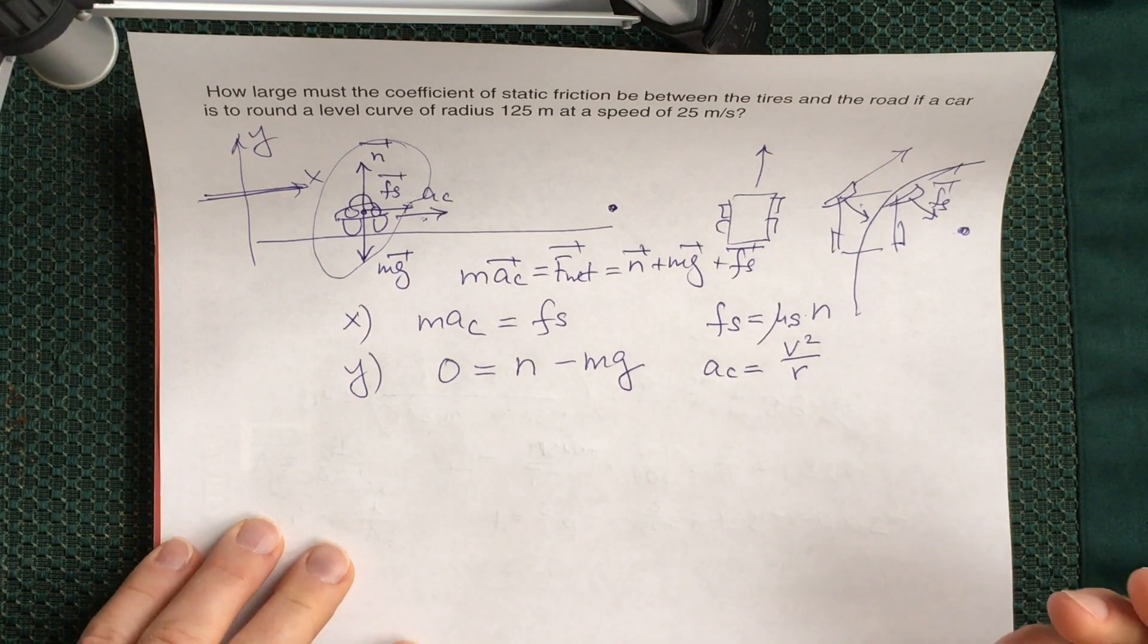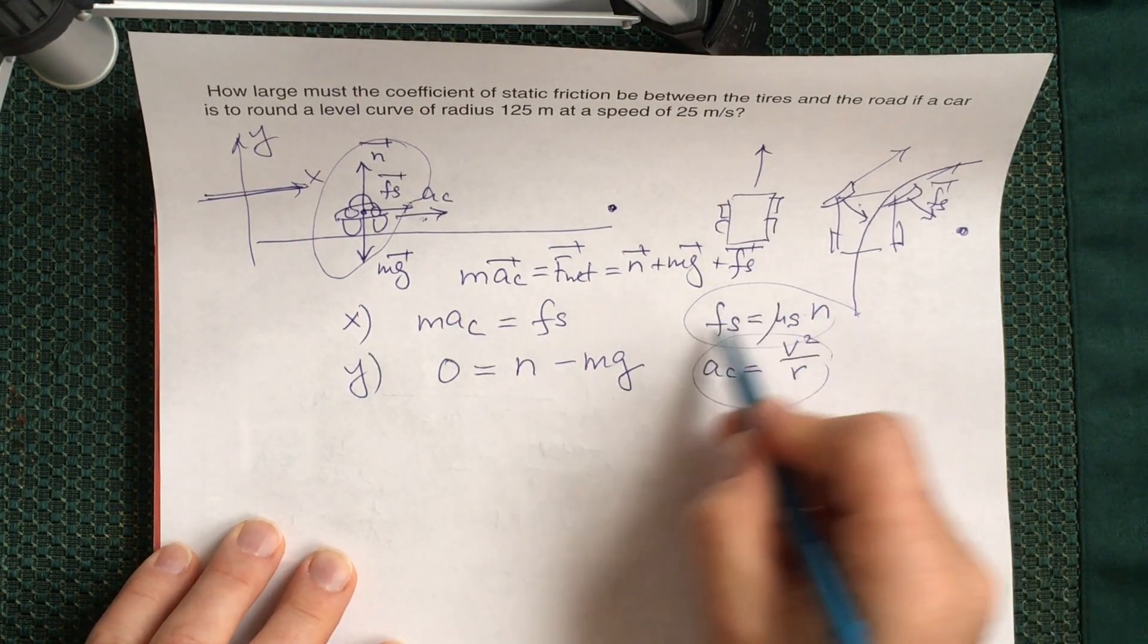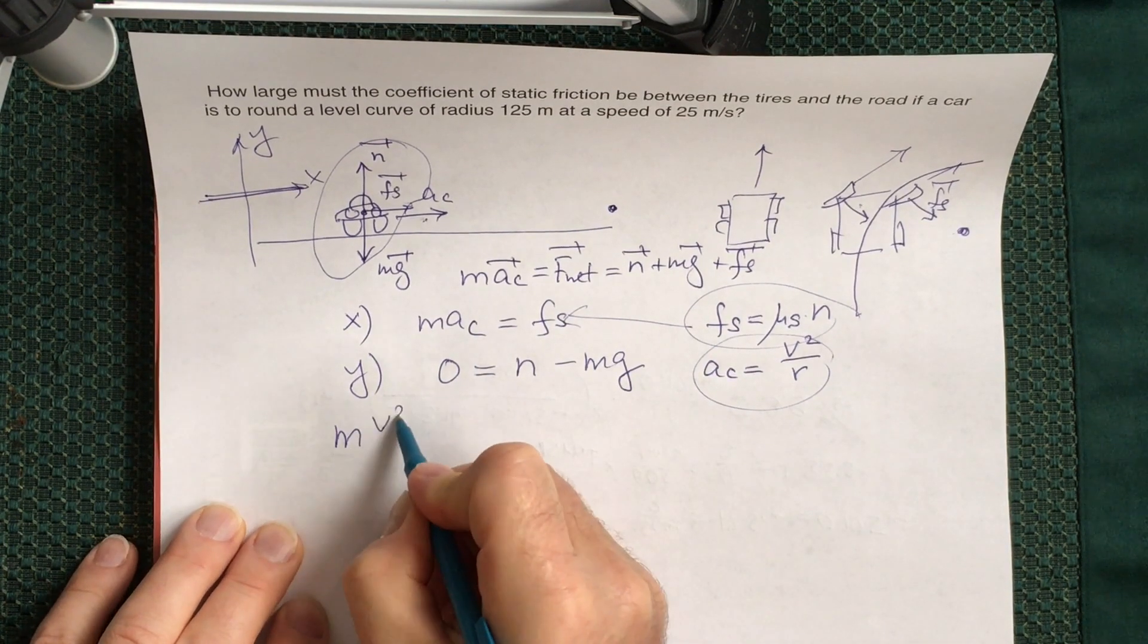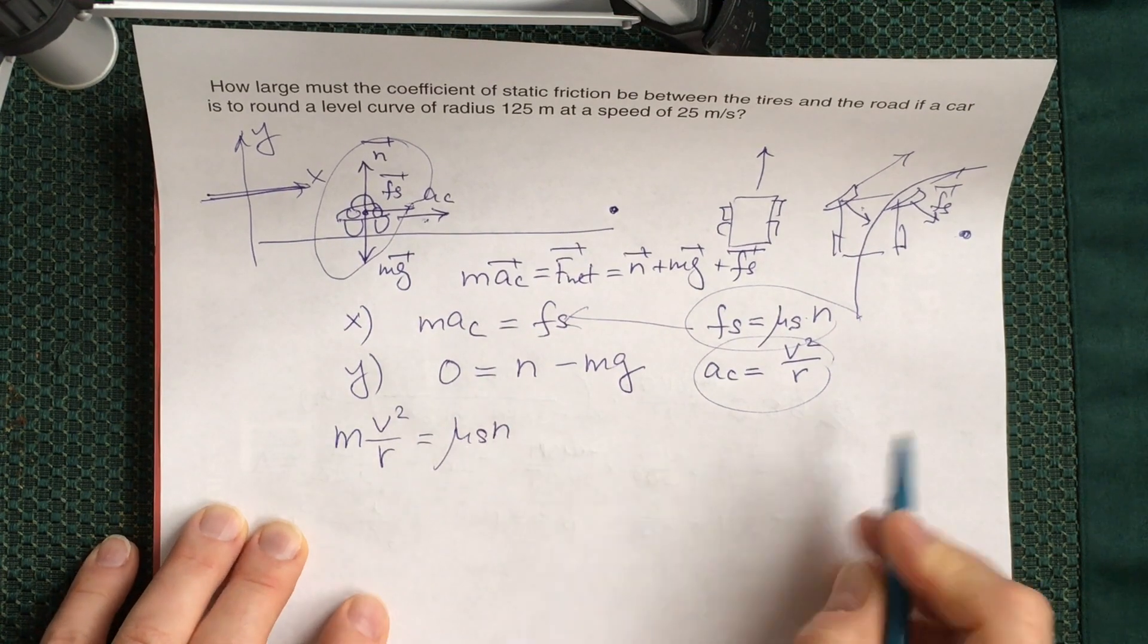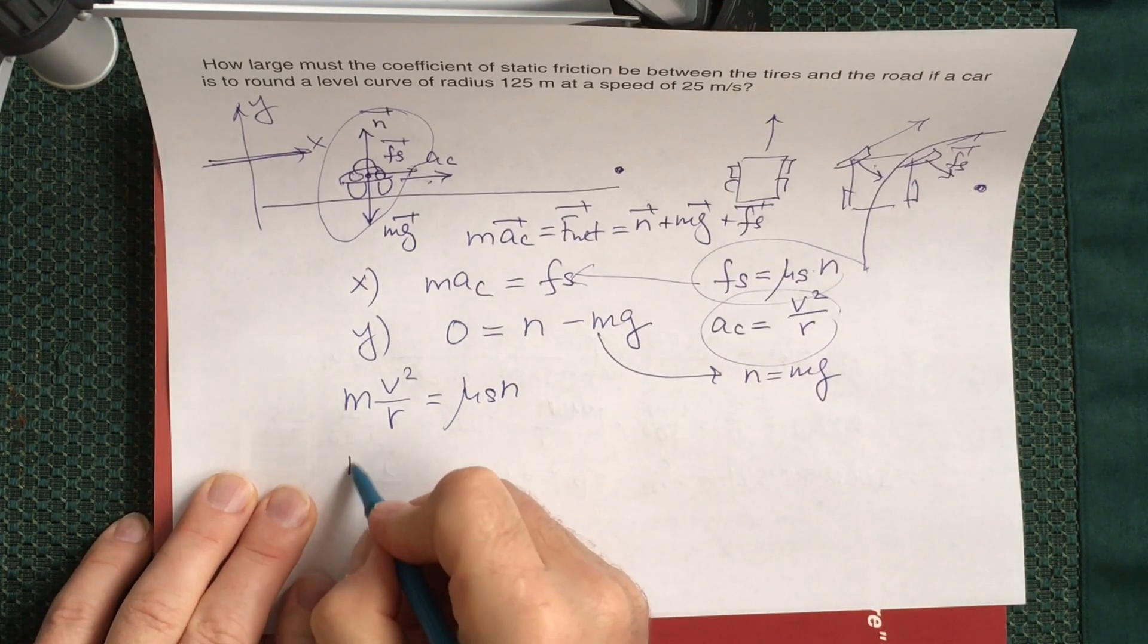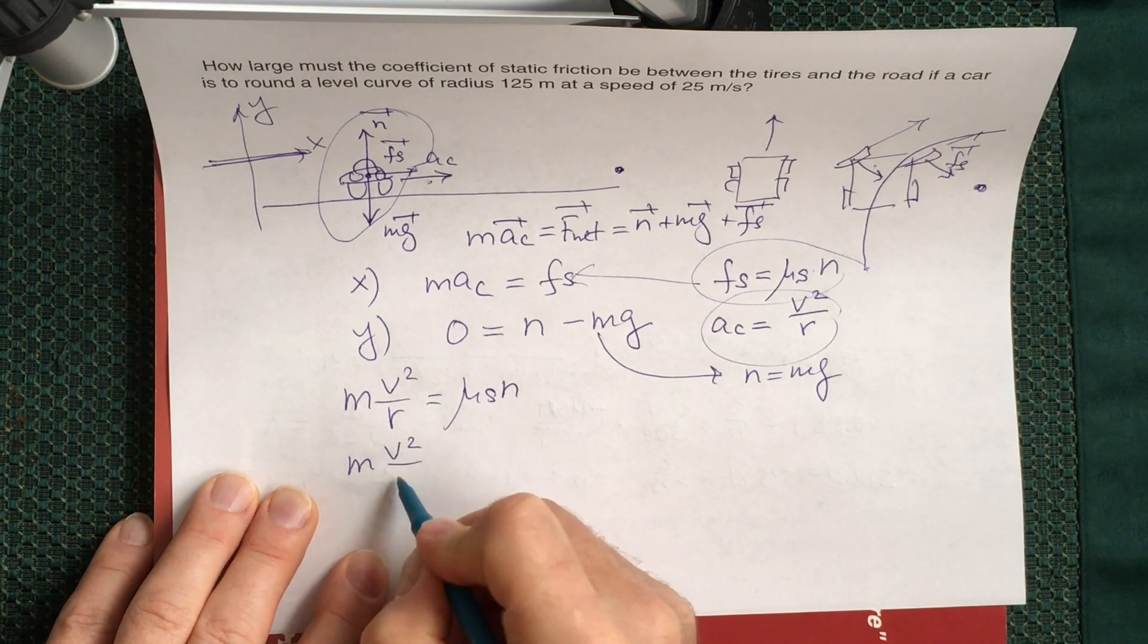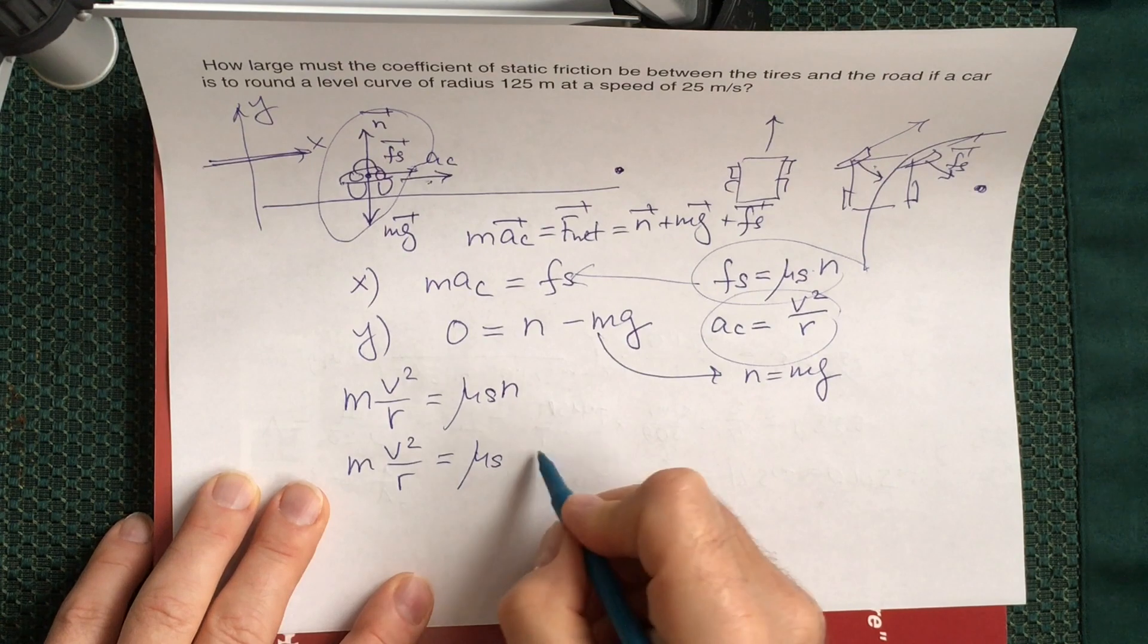So let's combine everything. I will put centripetal acceleration and static friction force in the first equation. I will have mass times v squared over R equals mu_s times N. From the equation for the vertical motion you see that N is equal to mg.